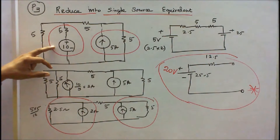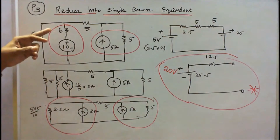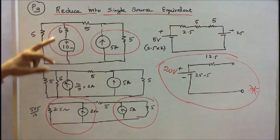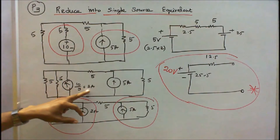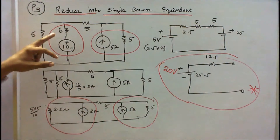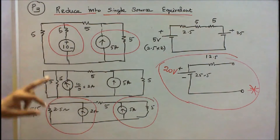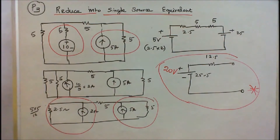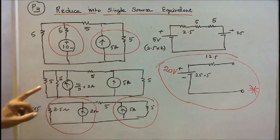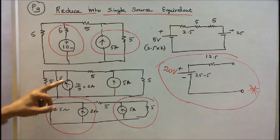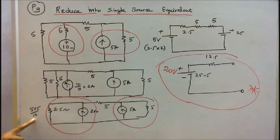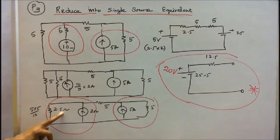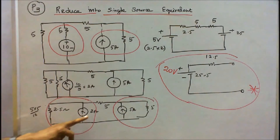First step: I will convert this voltage source into a current source. That is 10 divided by 5, equal to 2 amps, and the 5 ohm resistor is connected in parallel with the 2 amp current source. These 2 are in parallel: 5 into 5 divided by 5 plus 5, that is 25 by 10, equal to 2.5 ohms.